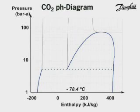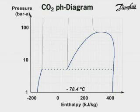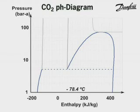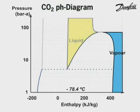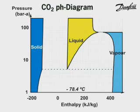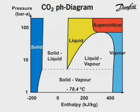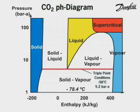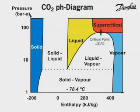For refrigeration purposes, the pressure-enthalpy diagram is commonly used. For CO2 applications, this diagram has to be extended so that the solid and supercritical phases are included. The coloured areas indicate the different phases of CO2, namely vapour, liquid, solid and supercritical. The triple point is here and the critical point is here.